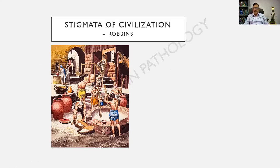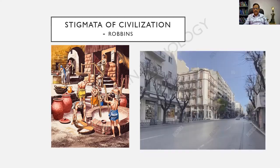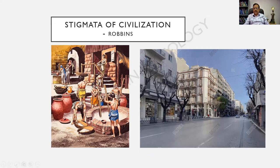Robbins calls peptic ulcer a stigmata of civilization. Look at ancient civilization where there is a lot of manual work — hardly any turmoil or competition among residents — compared with modern days: the concrete jungle, with automation, crowding, and competition.